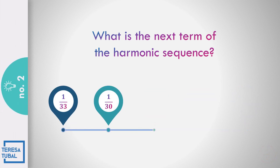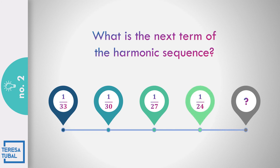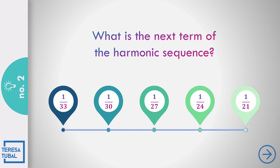Question number 2: What is the next term of 1/33, 1/30, 1/27, and 1/24? Correct — the answer is 1/21. As you can see in the denominator, the pattern is minus 3: 33 minus 3 is 30, 30 minus 3 is 27, 27 minus 3 is 24, and 24 minus 3 is 21.